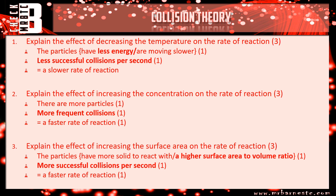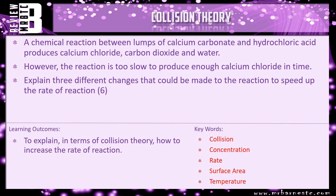That should give you three marks for each question. There is a review question to end this video: a chemical reaction between lumps of calcium carbonate and hydrochloric acid produces calcium chloride, carbon dioxide and water. However, the reaction is too slow to produce enough calcium chloride in time. Explain three different changes that could be made to speed up the rate of reaction — identify what you could do: increase the concentration, increase the surface area, and increase the temperature — and then explain how each affects the rate of reaction.